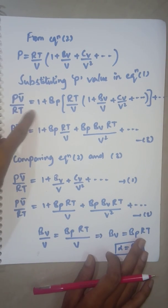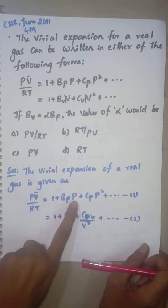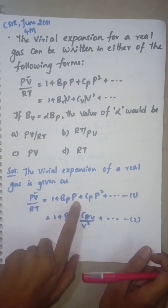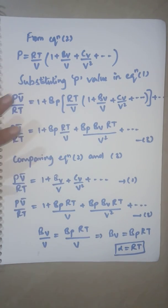Once you substitute, PV/RT equals 1 + BP. In the pressure term you just substitute with this equation so you get this value. PV/RT - you get this value.